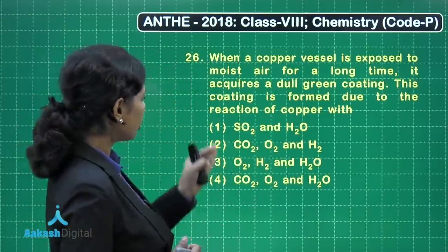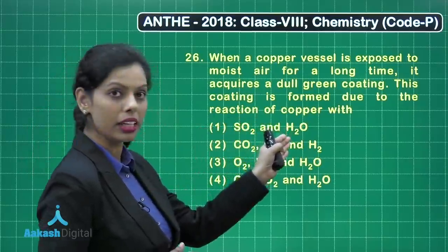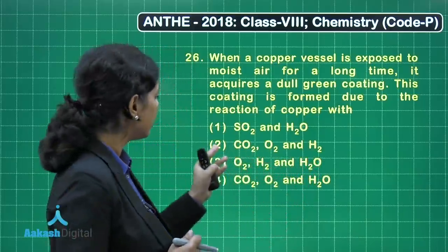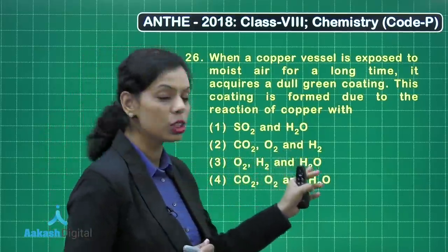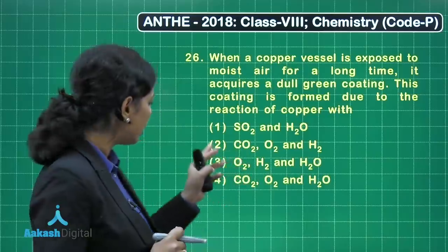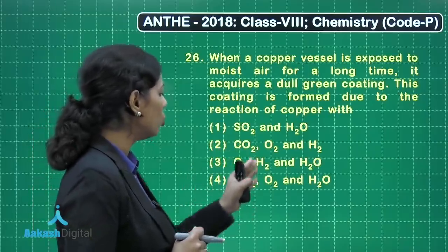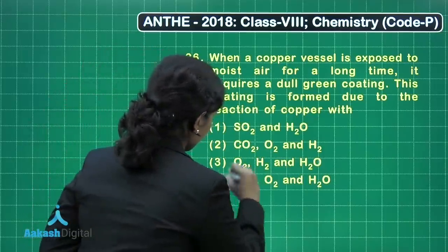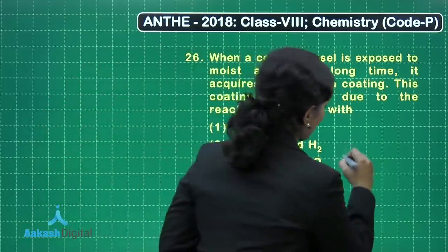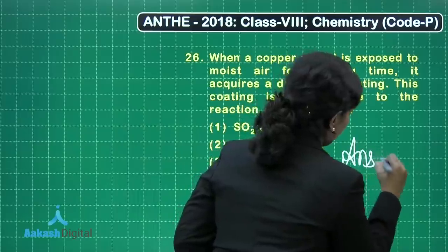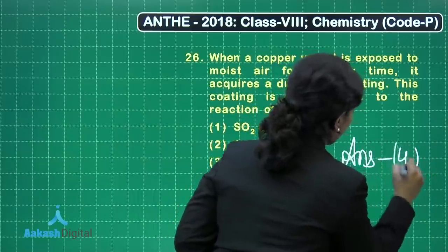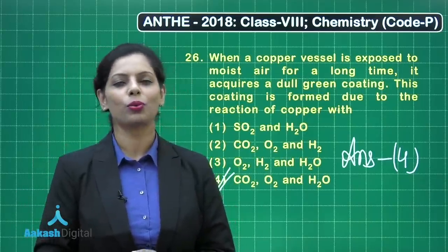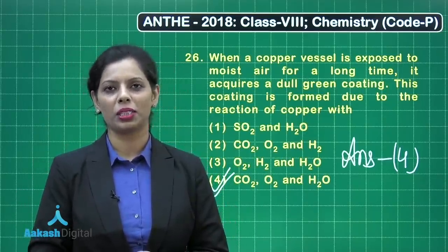Checking the options: option 1 has sulfur dioxide and water — not correct. Option 2 has CO₂, O₂, and H₂ — also not correct. Option 3 has O₂, H₂, and H₂O — also not correct. Option 4 gives CO₂, O₂, and H₂O — yes, that is the correct option. The reason for corrosion of copper is carbon dioxide, oxygen, and water vapors.